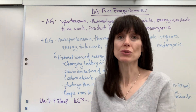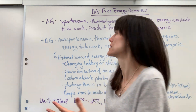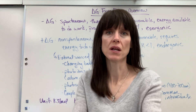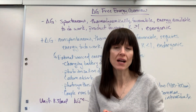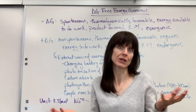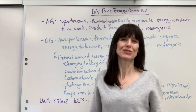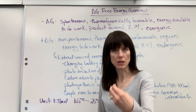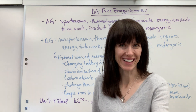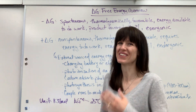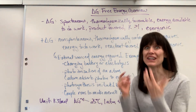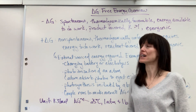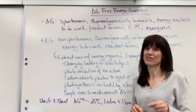Anything that produces energy has energy available to do work — we can harvest that and exploit it, usually to help mankind. Energy available to do work: we love that, so we love negative delta G.